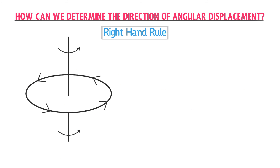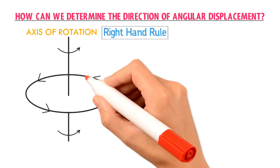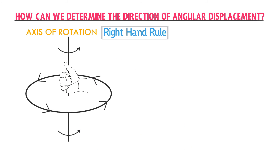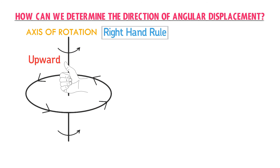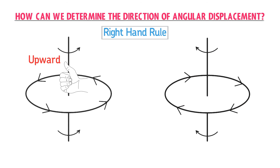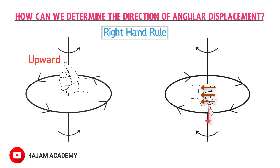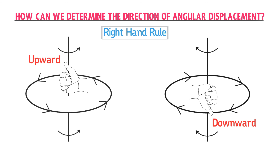Consider a body rotating in the counter-clockwise direction, with a line representing the axis of rotation. Grasp the axis of rotation with your right hand such that the fingers of your right hand curl in the direction of rotation. The thumb of your right hand then points in the direction of angular displacement. In this case your thumb points upward, so the angular displacement is directed upward or outward. If the body is rotating in the clockwise direction, curl the fingers of your right hand in that direction, and the thumb points downward — so the angular displacement is directed downward or inward.